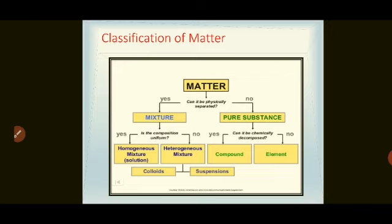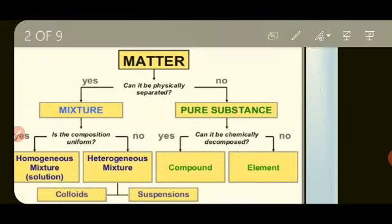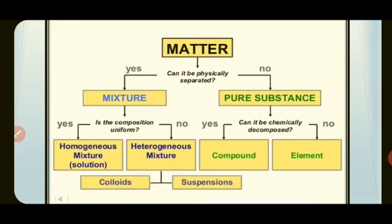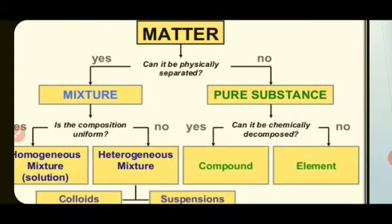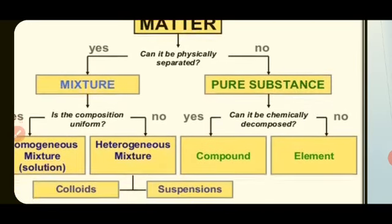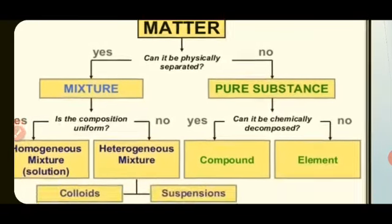In last class, we have seen what is meant by matter. Today we will see how the matter is classified, that is classification of matter. There are many things around us which have some mass and which occupy space. Matter is broadly classified based on whether it is physically separated or not. If the matter is physically separated, it is called a mixture; if not, it is called a pure substance.